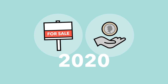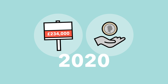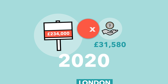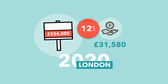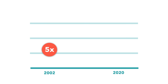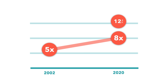In 2020, the median house in England and Wales cost £243,000 and the median income was just £31,580, meaning the median house now costs nearly eight times the median income. This rises to about 12.5 in London, where the median income is about £38,592 but the median house costs £483,000. Housing relative to income has become a lot more expensive over the years.